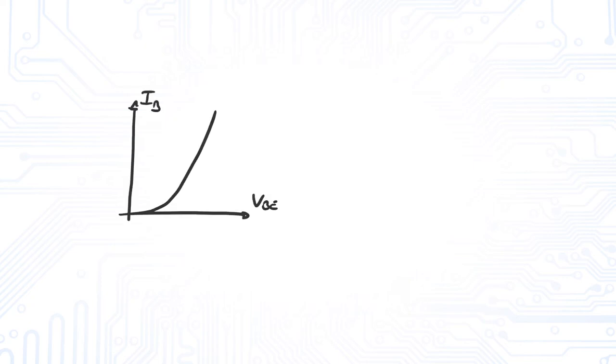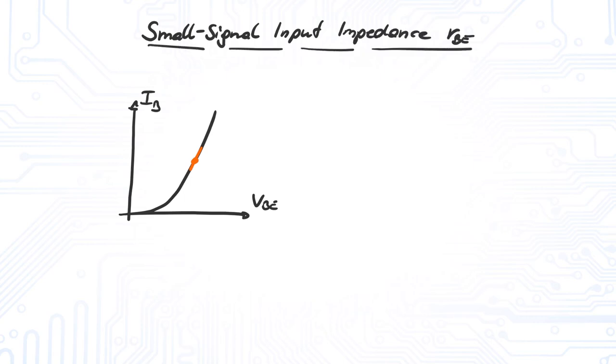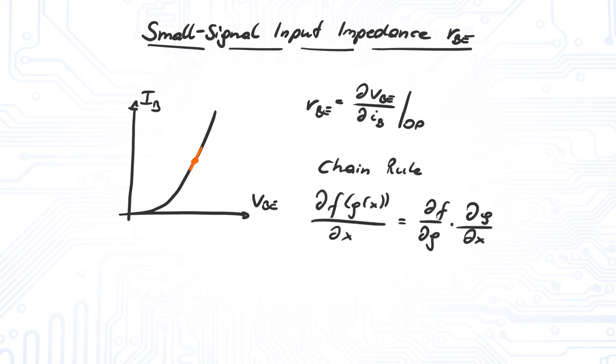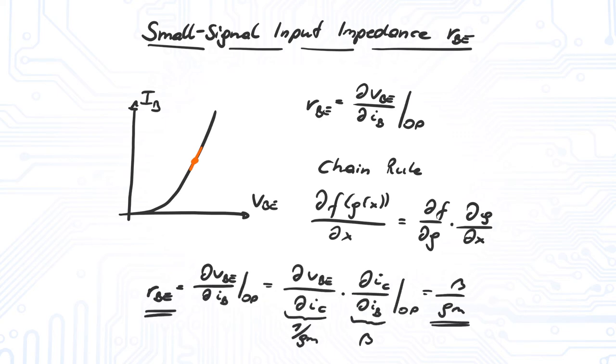The slope of the input characteristic is proportional to the small signal input impedance RBE. To calculate RBE, we apply the chain rule. The small signal input impedance is then simply beta divided by GM.